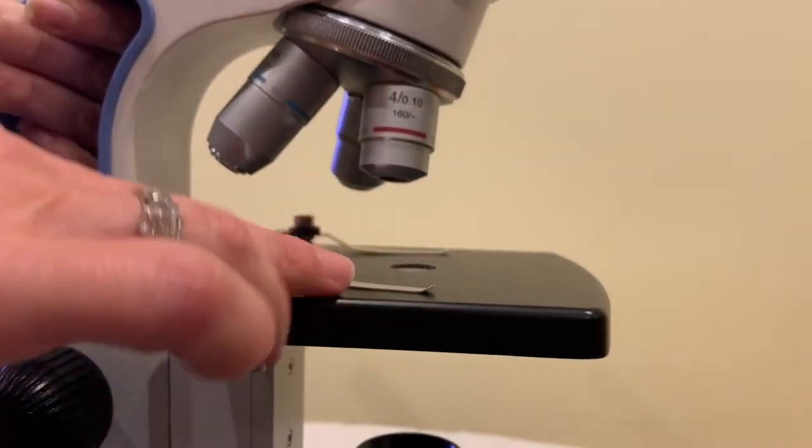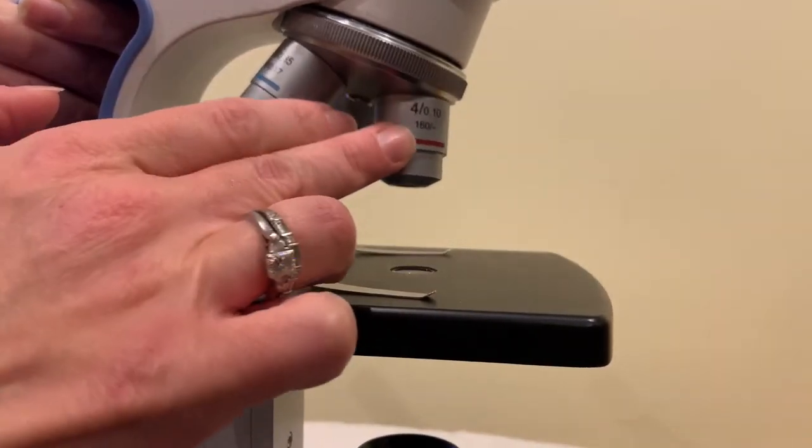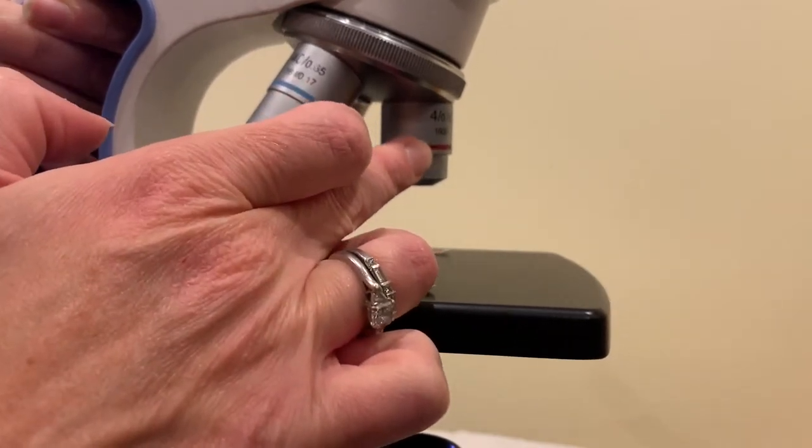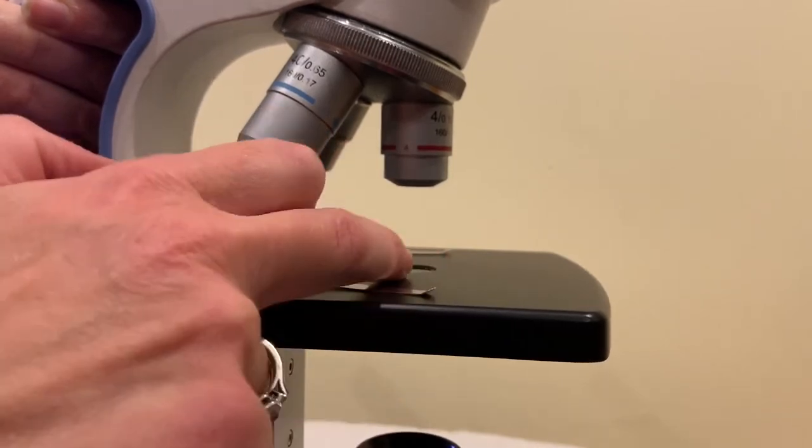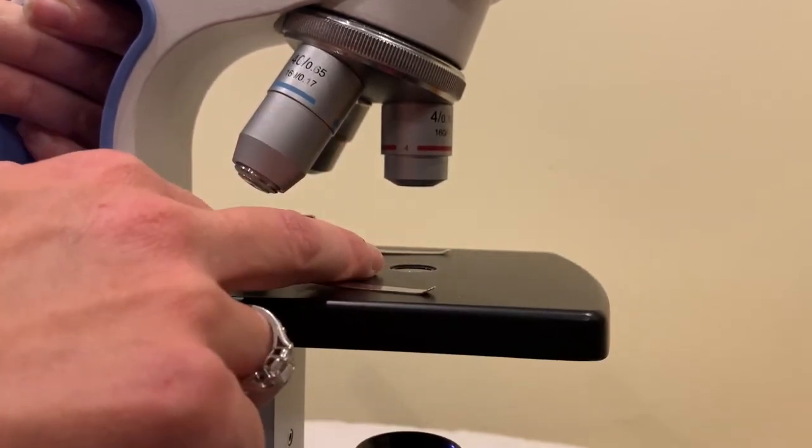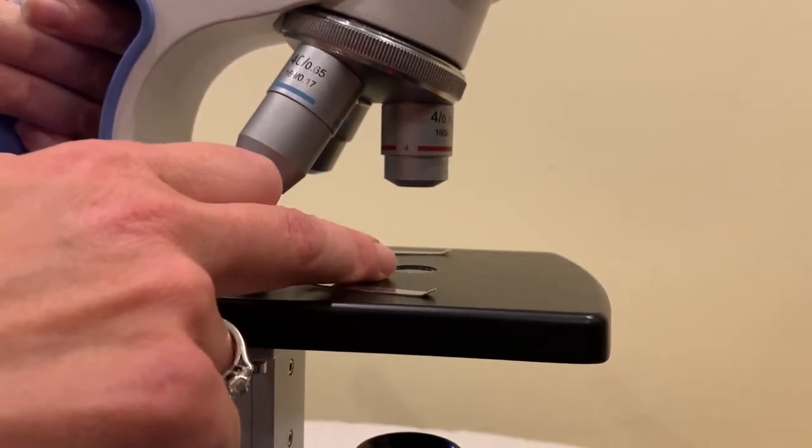So when you have your sample here and the objective lens is pointing down and you look through the ocular lens, your sample will look 40 times larger than it would with the naked eye.